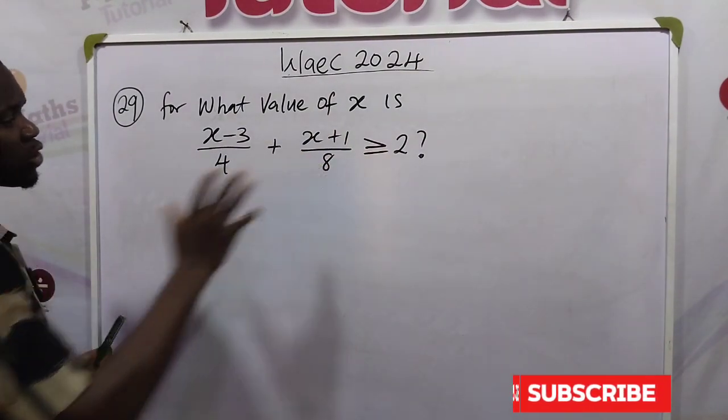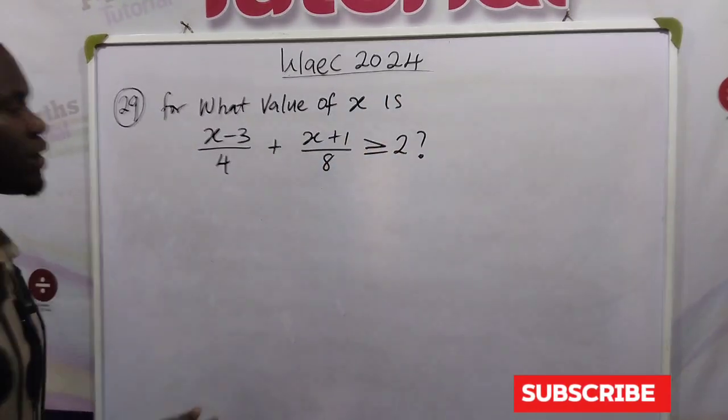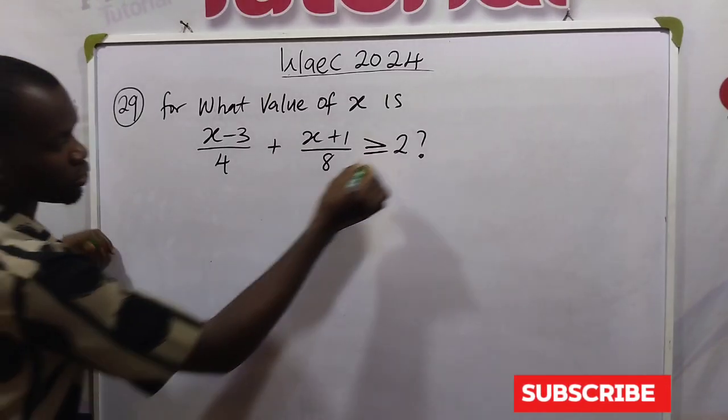Now to simplify inequalities such as fractions where you have 3 terms, 1, 2, 3, find the LCM of your denominators.